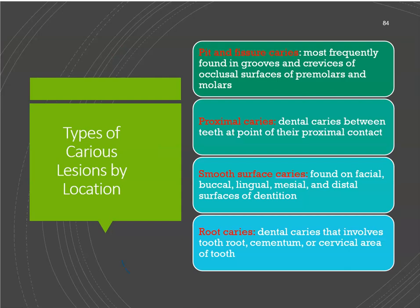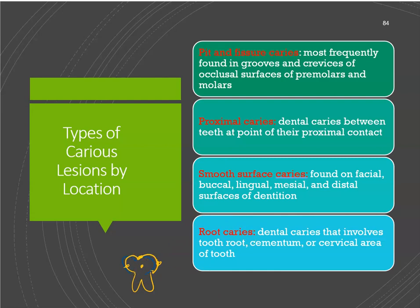When you look at a tooth, cavities on the pit and fissure are called pit and fissure caries. Cavities on the mesial or distal are called proximal caries because they're on the interproximal region. Cavities on the buccal or lingual side are called smooth surface caries. And root caries is when you see cavities on the root.